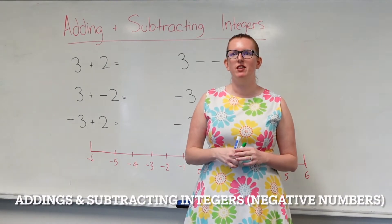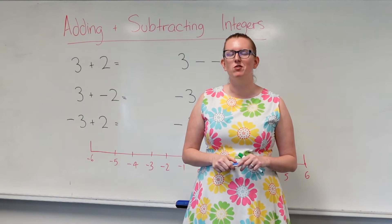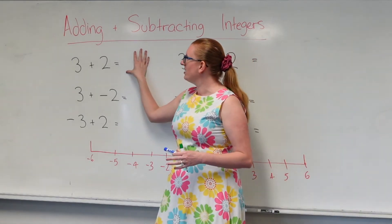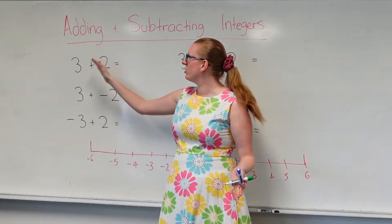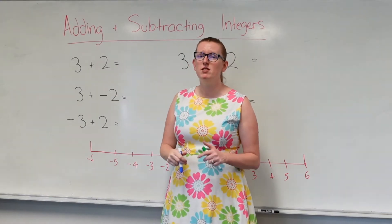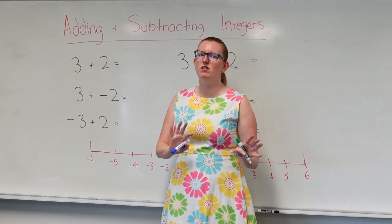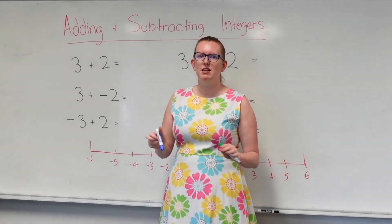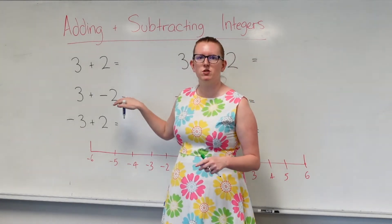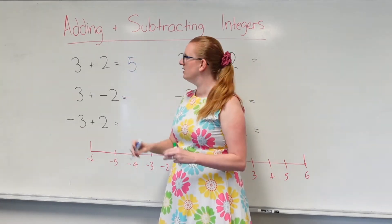Today we're going to look at adding and subtracting with integers when there are negative numbers involved. Here we've got a standard addition. We've got 3 plus 2. Both of the numbers are positive, so I don't have any negatives involved. There's no chance that my answer's going to be negative. I'm just going 3 plus 2. That's 5. Easy peasy.